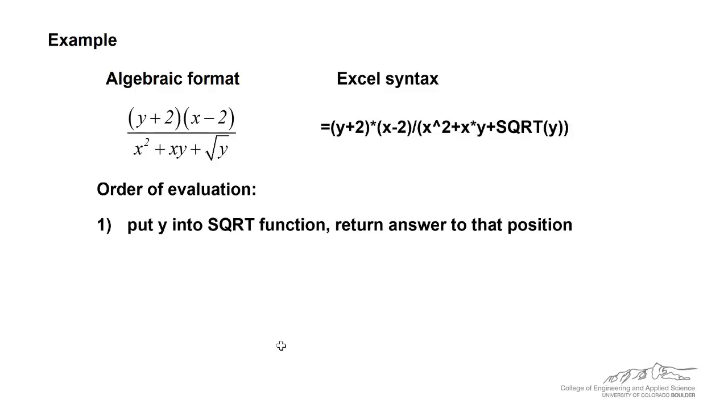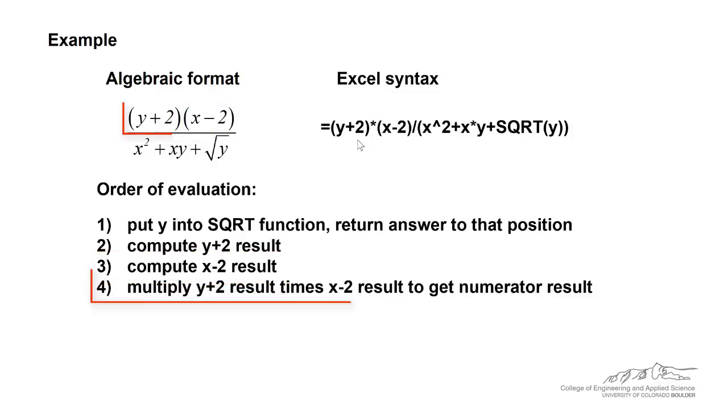I wanted to sort of go through how Excel does this. Remember that functions are evaluated first. So Excel places Y into the square root function. It returns an answer to that position. Then it computes the Y plus 2 result. So remember, it evaluates left to right. So in our Excel formula here, it evaluates the Y plus 2 first. Then Excel computes the X minus 2 result. It multiplies the Y plus 2 result times the X minus 2 result to get a numerator result.